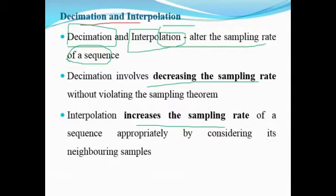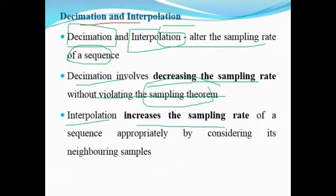Decimation is the process of decreasing the sampling rate without violating the sampling theorem — the concept of Nyquist sampling rate. Interpolation is where the sampling rate is increased. Whatever action is performed, whether decreasing or increasing the sampling rate, it should never affect the sampling process. Interpolation increases the sampling rate of a sequence. That is the basic concept of decimation and interpolation.